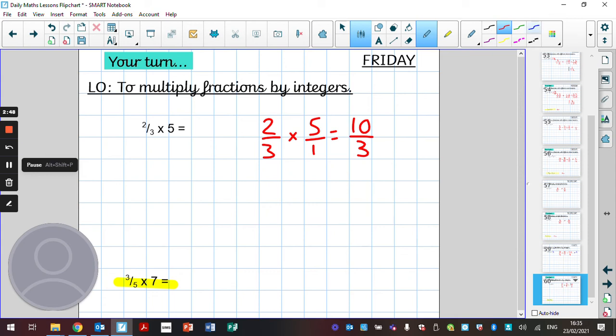We've identified that we have got an improper fraction so we need to change that to a mixed number now. How many threes in ten? Well we've got three wholes. Have we got a remainder? Yes we have. We've got one remaining.